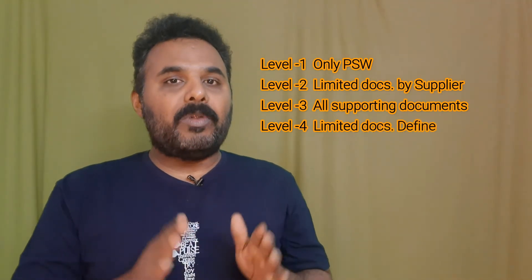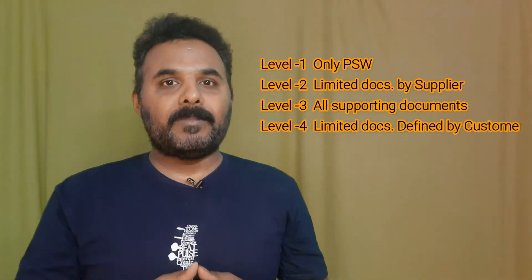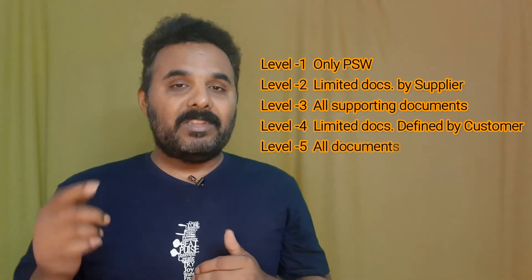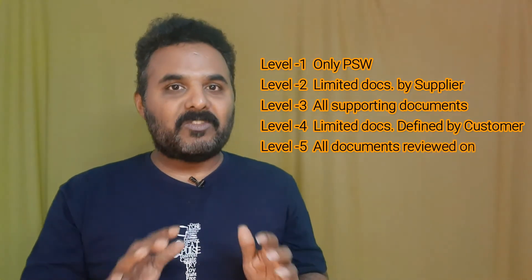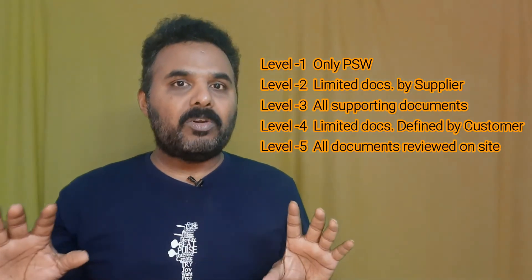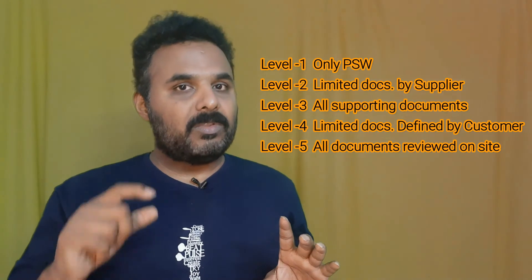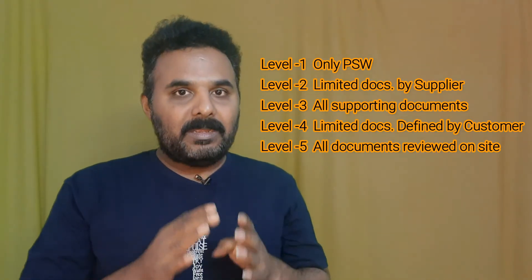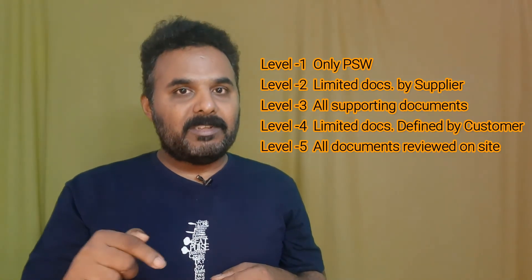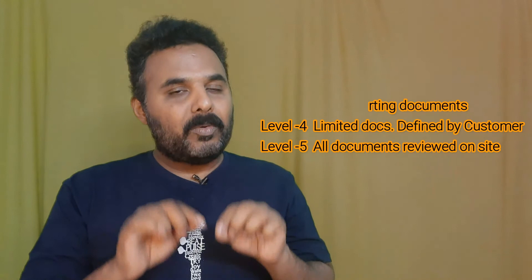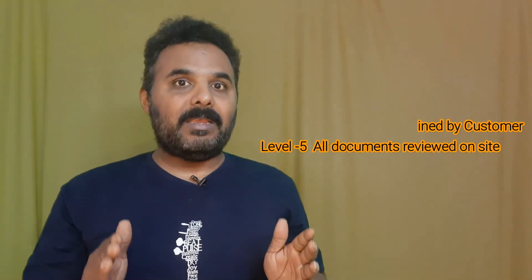Level 3 is all supporting documents submitted to the customer for approval. Level 4 is limited documents as defined by the customer, submitted along with PSW and samples — applicable when the customer does not want all documents, such as for bulk materials, paint, grease, or hardware. Level 5 is similar to level 3 where all applicable documents are submitted, but instead of document submission, the customer visits on-site at the supplier end to review documents and process on-site before granting approval. Level 5 is followed for critical application parts and assembly aggregates.